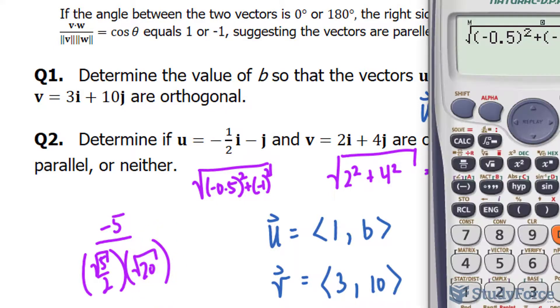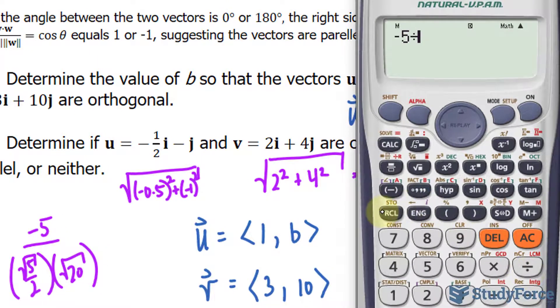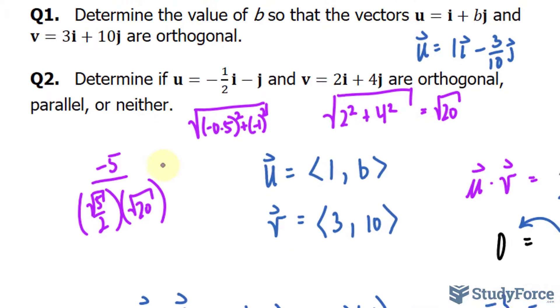Now, let's go ahead and evaluate that. Negative 5 divided by the product of these two. So I had the square root of 5 over 2 times the square root of 20. We actually end up with negative 1 on the left side.